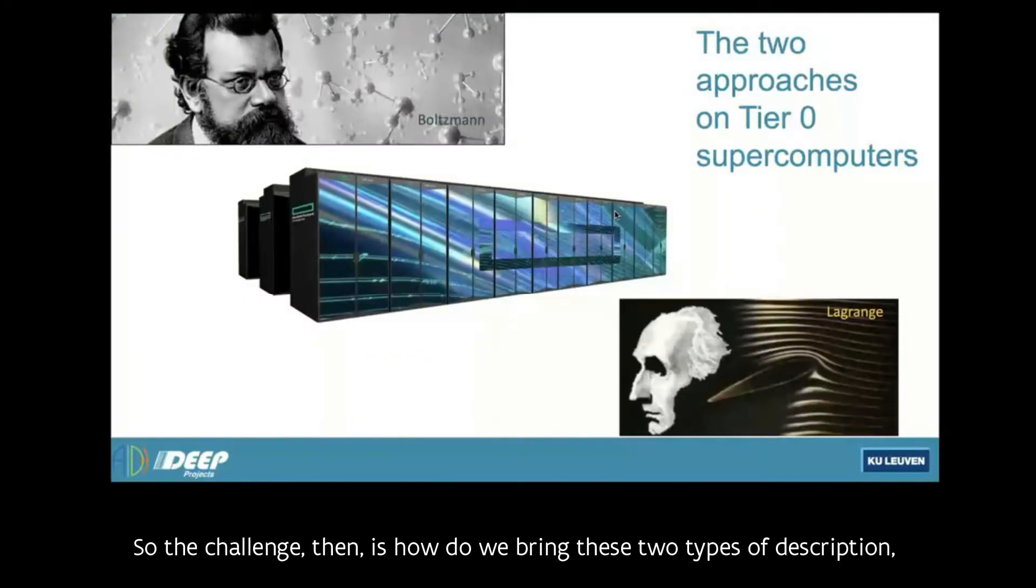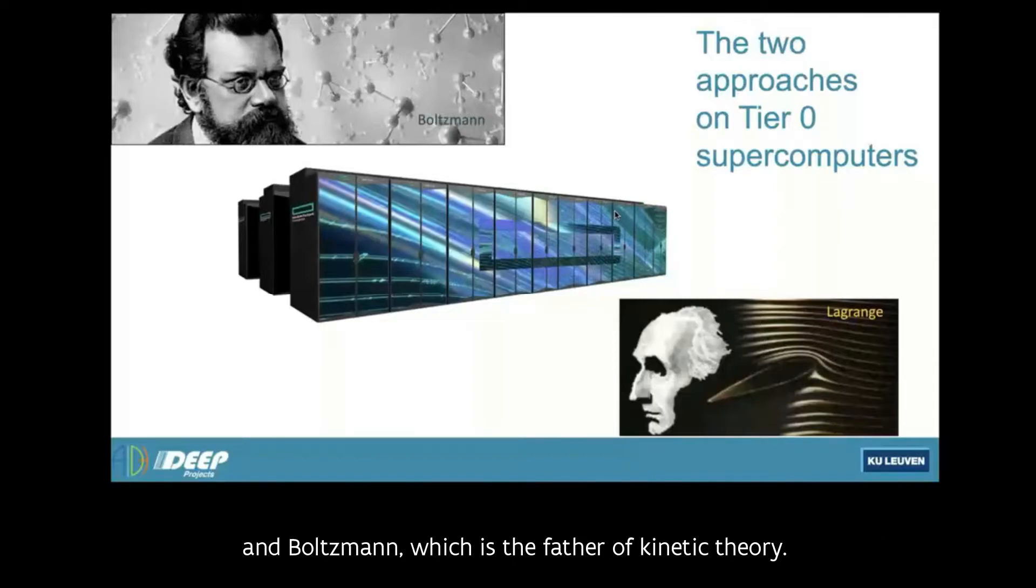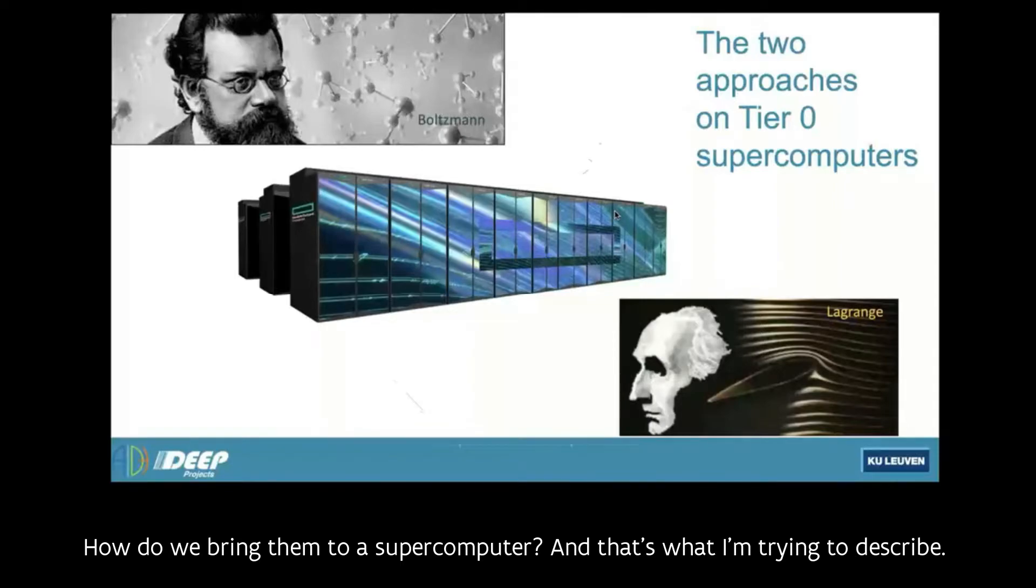So the challenge then is how do we bring these two types of descriptions, the fluid description and the kinetic description? Here, I have Lagrange for the fluid description and Boltzmann, which is the father of kinetic theory. How do we bring them to a supercomputer? And that's what I'm trying to describe.